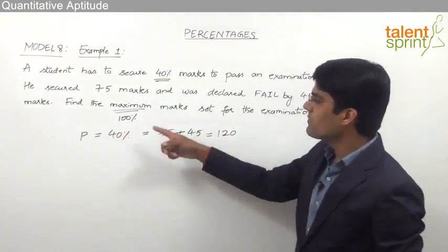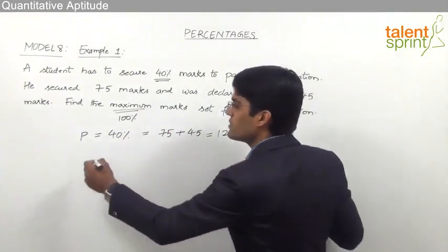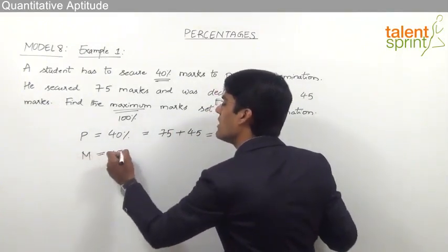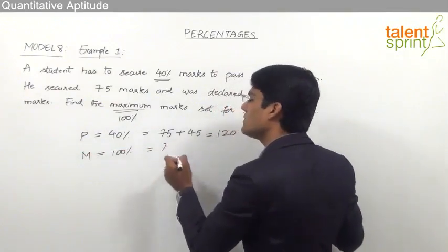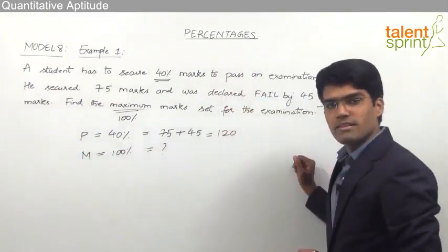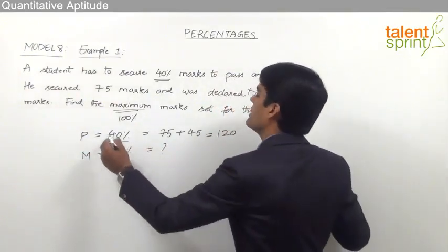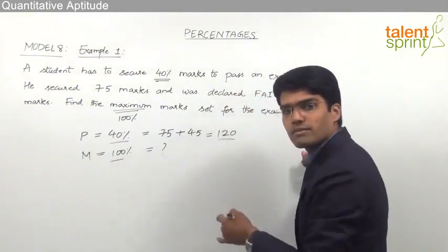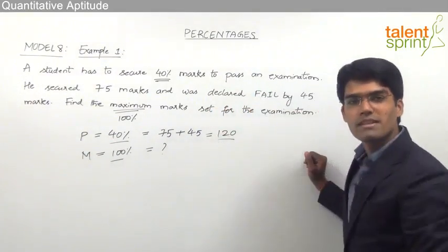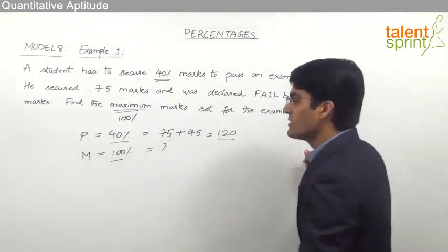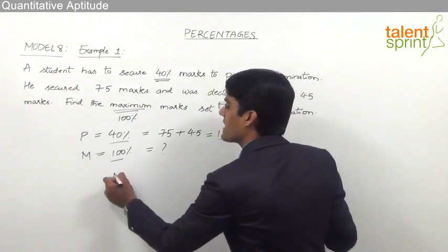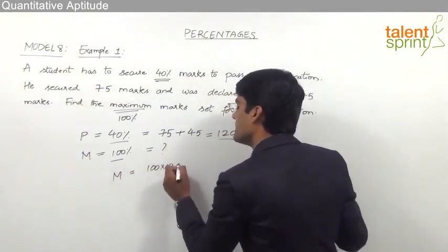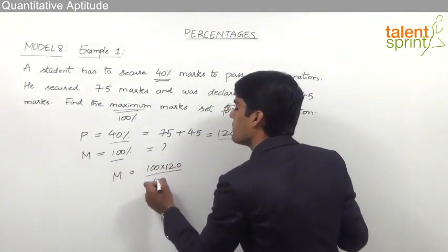We are supposed to find out the maximum marks. Let us assume the maximum marks are M, which is equivalent to 100%. We know that 40% is 120, so 100% should be what? By cross multiplication we get the required answer — the maximum marks would be 100 × 120 ÷ 40.